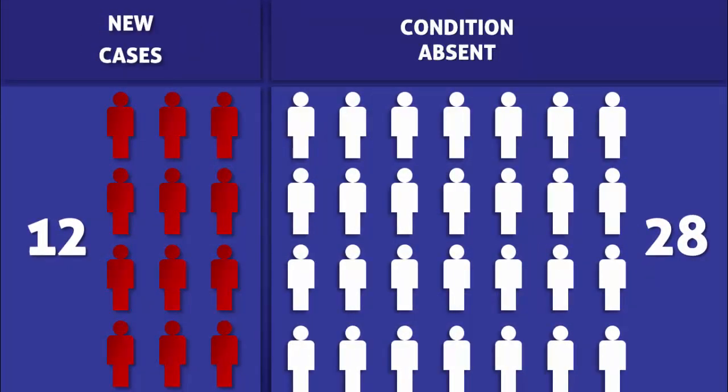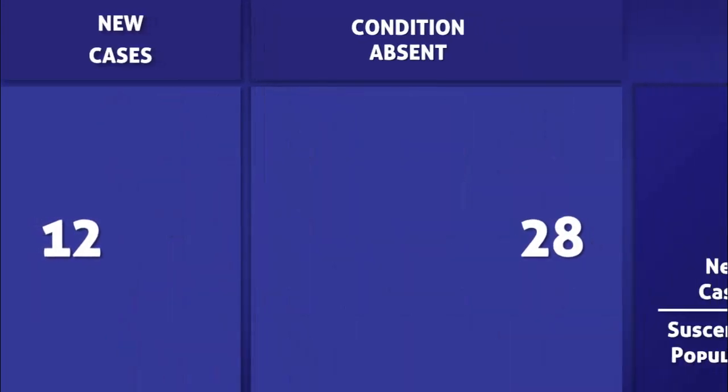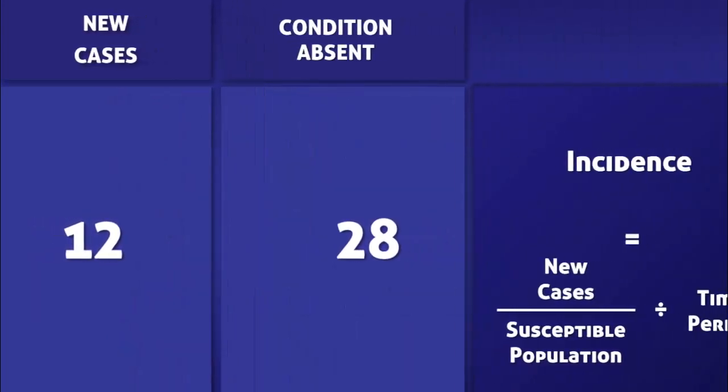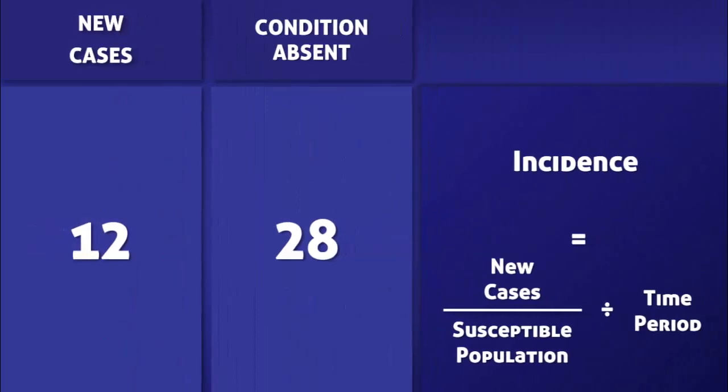In this example, across a three-year time period, 12 people developed the condition and 28 people didn't. To calculate the incidence, we need to divide the number of new cases by the total number of people that were susceptible to developing the condition at the beginning of the time period, and then divide that value by the duration of the study.